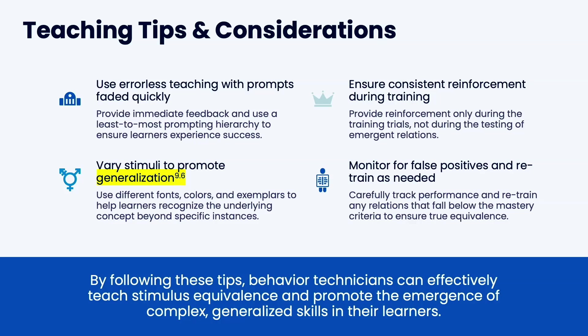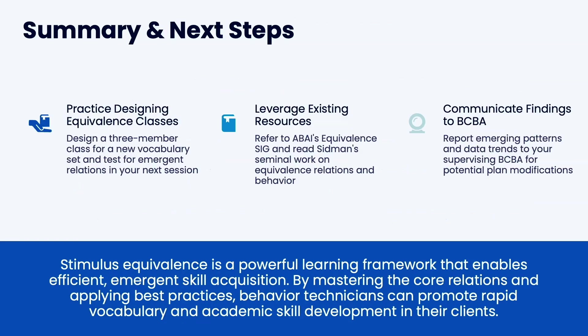Practice coming up with equivalence classes — think of three things you could teach right now and write them down. This is complex stuff, so always look at resources and get supervision so you fully understand whether emergent relations are happening correctly and when to move on. You want someone else helping you work through these ideas. Thank you.